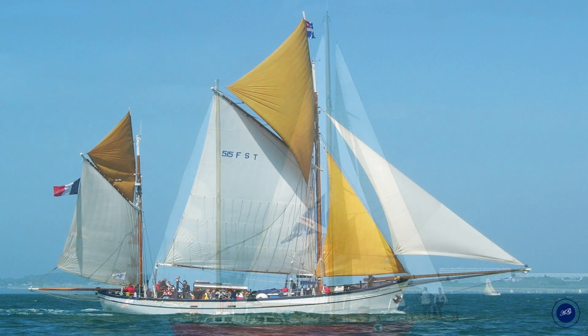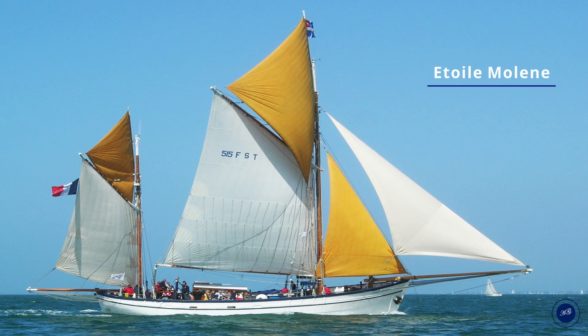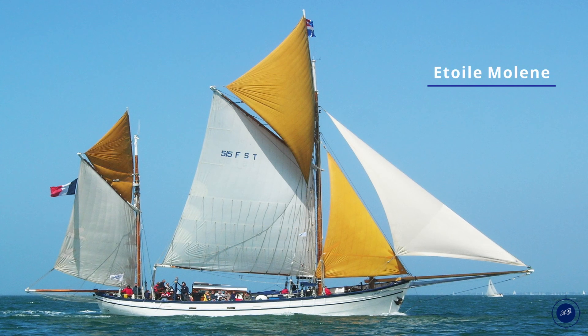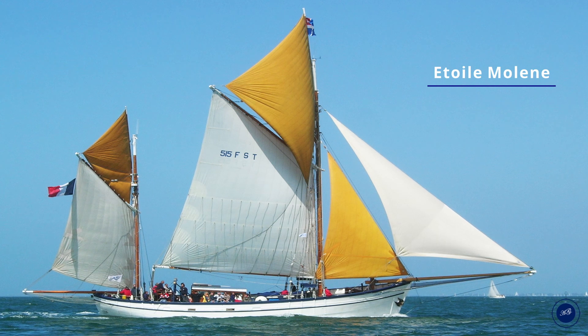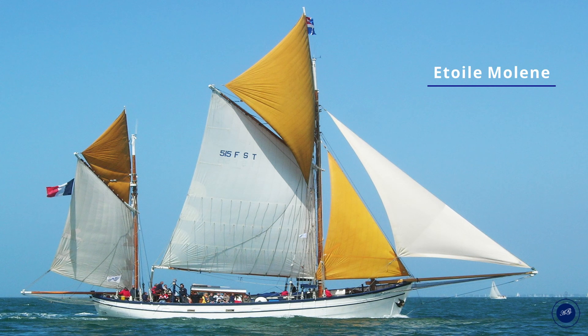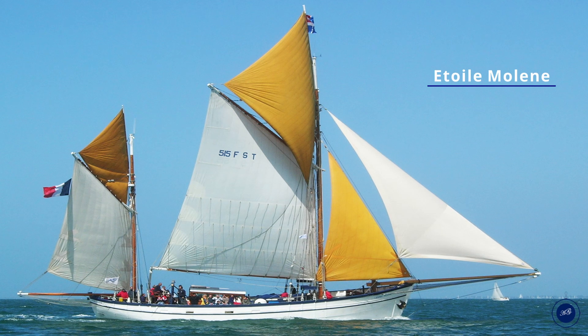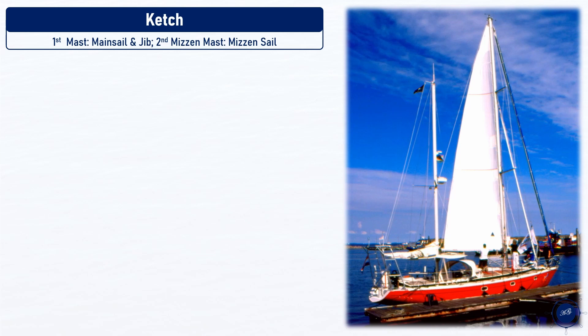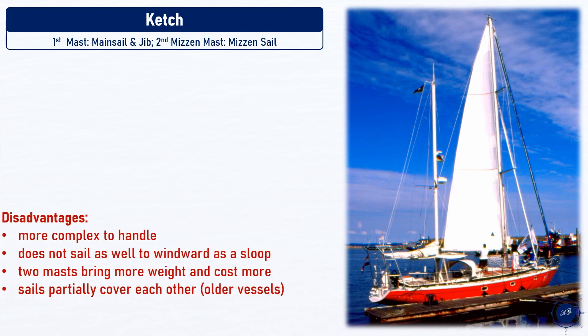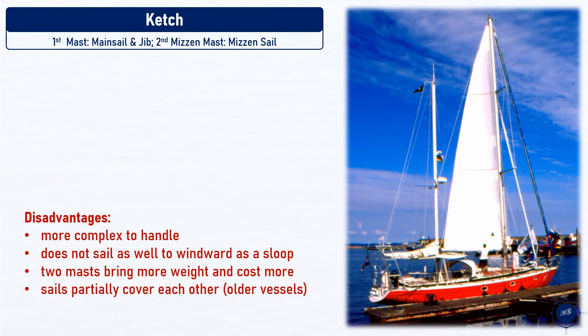A ketch can also carry two smaller sails instead of a mainsail. With two masts, a ketch is more complex to handle because you have to operate more sheets. A ketch does not sail as well to windward as a sloop, and the mizzen mast is in the middle of the cockpit on an aft cockpit boat. The two masts also bring more weight and cost more. When the wind is blowing from behind, the mizzen covers the mainsail, and when upwind, the mainsail can disturb the airflow of the mizzen mast.